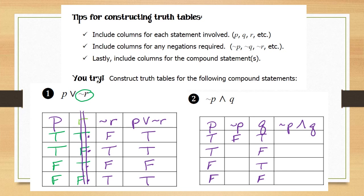Welcome back. Taking not p: opposite of true is false, opposite of true is false, opposite of false is true, opposite of false is true. We no longer need column p. For not p and q — in a conjunction, both statements must be true — the only row with true and true is the third row. All other rows have at least one false, so the remaining truth values are false.